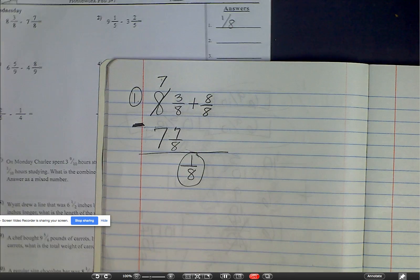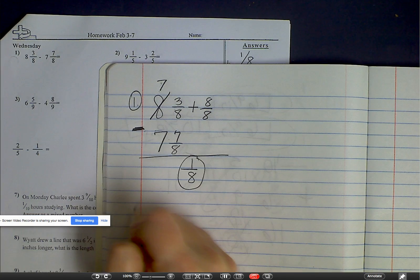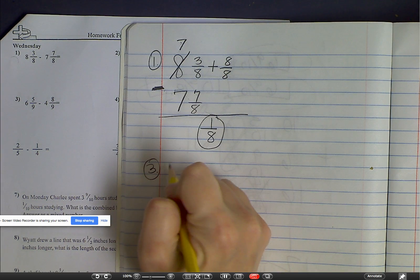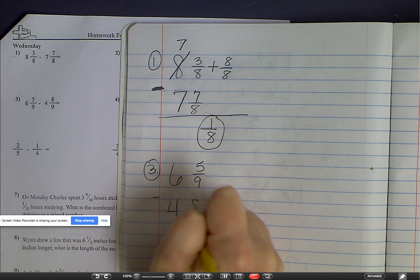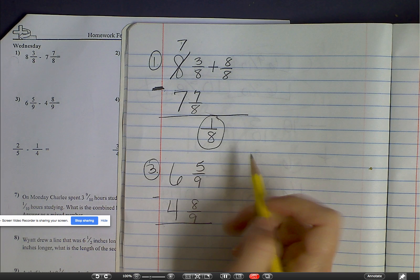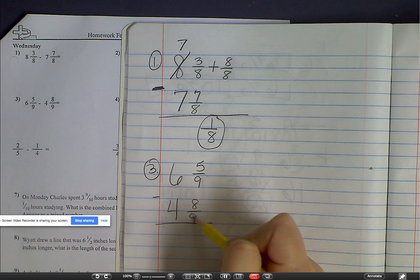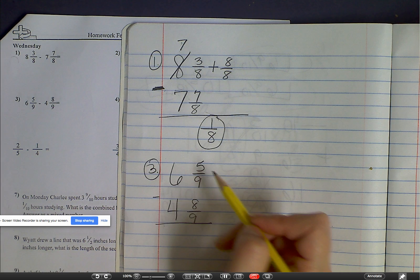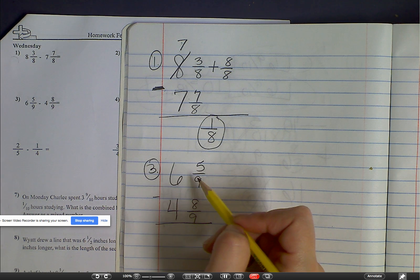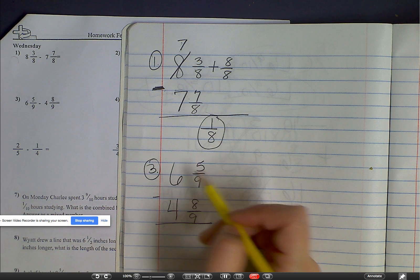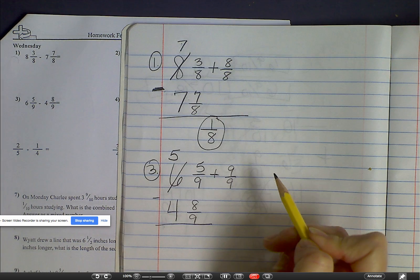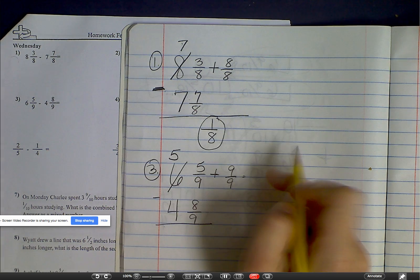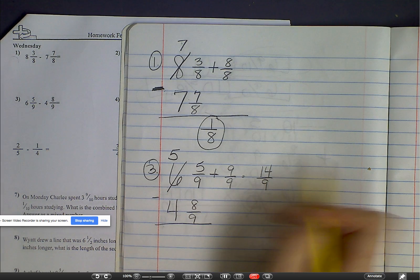Number three is six and five-ninths minus four and eight-ninths. So I look at my denominators. They're the same, so I don't need to change anything there. What I'm going to do is change this out to a five, and then I'm going to add nine over nine here. So this becomes fourteen over nine, and now I can subtract.